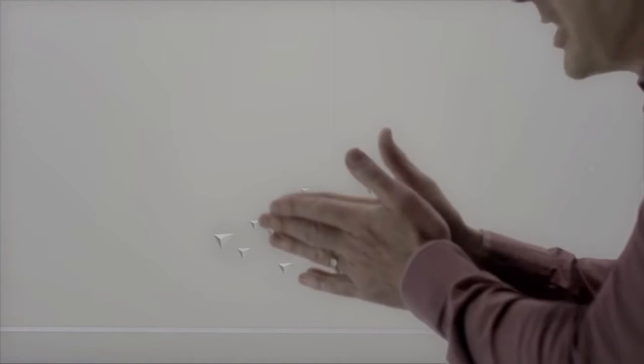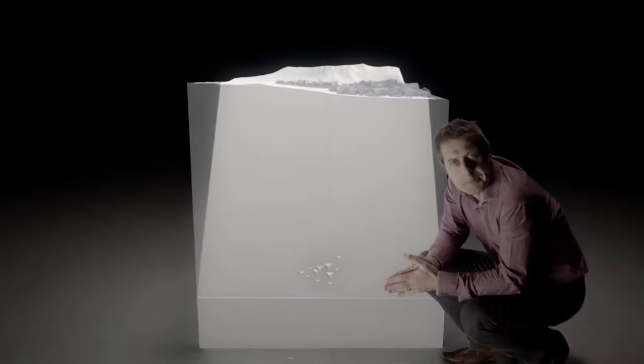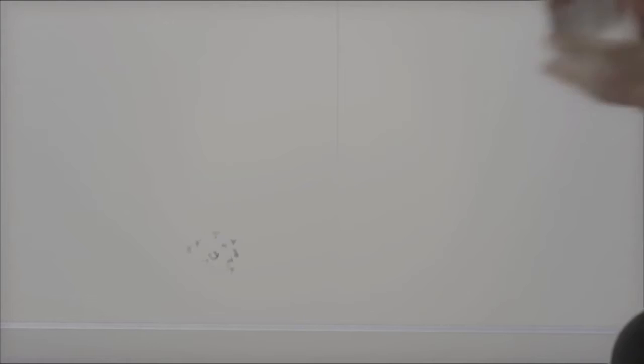The fault itself is locked. The blocks of rock on each side are snagged on rough patches that prevent the sides from sliding past each other. But the thing is, those minor earth tremors are picking away at those strong points, breaking them down. And eventually, the points of resistance give way.